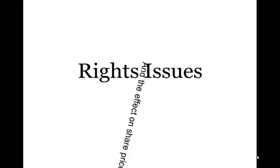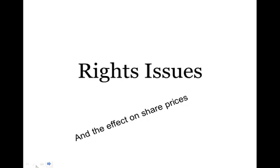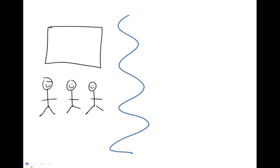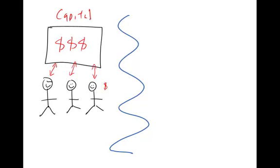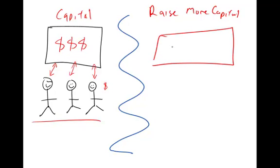We're looking at rights issues and the effect they have on share prices. When we first started the course we talked about a company raising capital — the money they need to run their business. They can go to a bank, but when they float on the market they release shares and shareholders buy them for cash, making those shareholders part owners. Later, if they need more capital, they can't refloat, so they either borrow from a bank with an interest rate attached, or they do a rights issue.